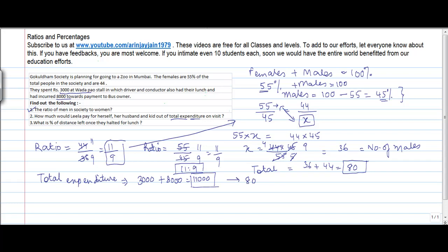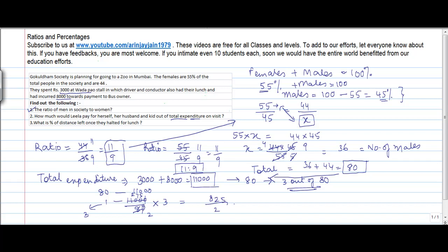The number of people in the society is 80, and Leela, her husband, and her kid make 3 out of 80 people. Using the unitary method: 80 people incur a cost of 11,000, so 1 person incurs 11,000 divided by 80. For 3 people: 11,000 divided by 80, multiplied by 3. Simplifying by dividing by 4 twice gives 412 rupees 50 paisa. So Leela pays 412 rupees and 50 paisa.